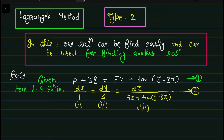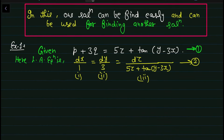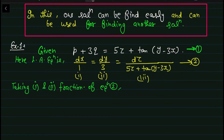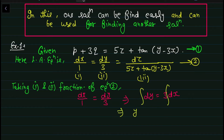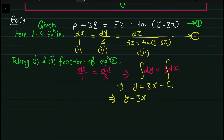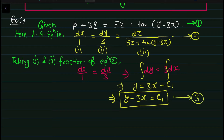जैसा कि मैंने आपको बताया, Type 2 में एक solution तो बहुत easily निकल जाएगा। तो अगर यहाँ पर हम first और second fraction को लें — taking first and second fraction of equation 2 — तो हमें मिलेगा dx/1 = dy/3। इसको simplify करें तो dy = 3dx। Integrate करने पर हमें मिलता है y − 3x = C1। एक solution हमें easily मिल गया।